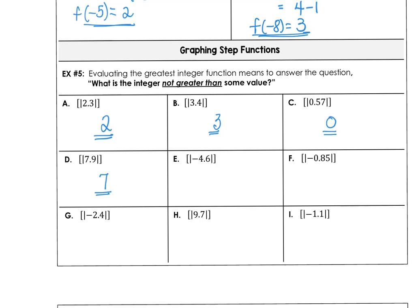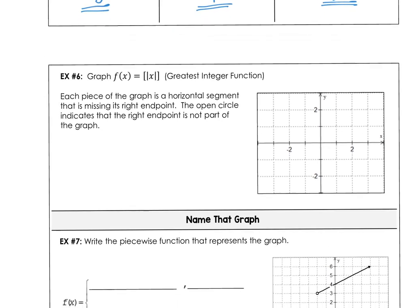And be careful now, the integer not greater than negative 4.6 when you step down is negative 5. And the same thing for negative 0.85 and negative 2.4. 9.7 is 9. And here negative 2. So the greatest integer function is the integer not greater than the value in the special brackets.